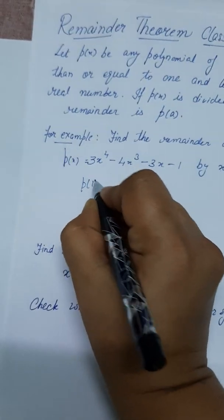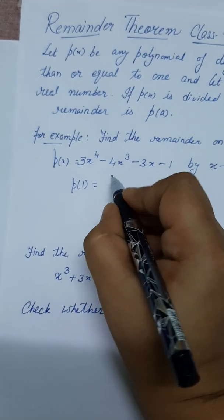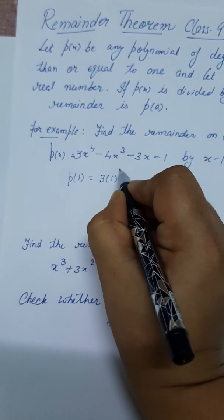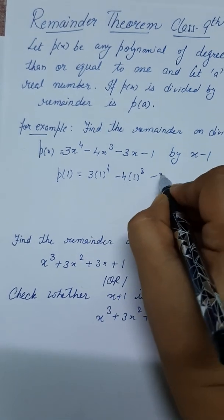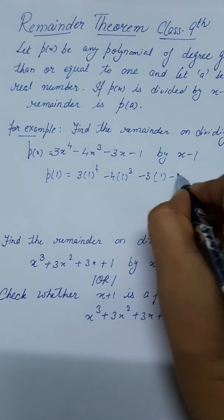We will put 1 in the place of x. So 3 into 1⁴ minus 4 into 1³ minus 3 into 1 minus 1.